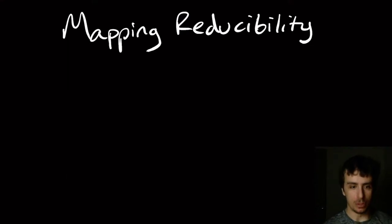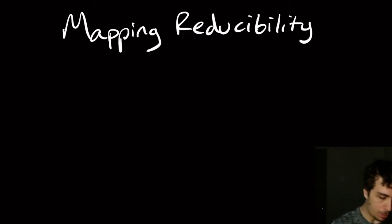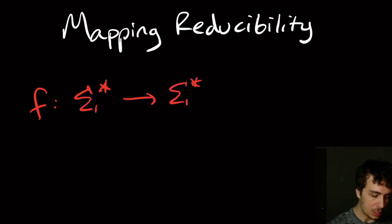Today we're going to talk about mapping reducibility, but before we do that we need to talk about computable functions. So let's say that we have a function f which takes arbitrary strings to arbitrary strings. This could be technically any function.